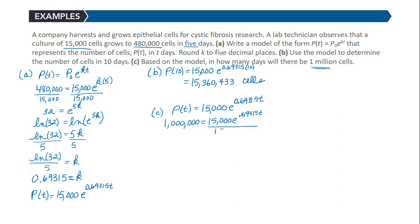So 1 million equals 15,000 times e^(0.69315t). We can divide each side by 15,000. When we simplify that fraction, we get 200/3 equals e^(0.69315t). This looks very similar to the previous problem - we can take the natural log of each side. The natural log of e^(0.69315t) is just 0.69315t.